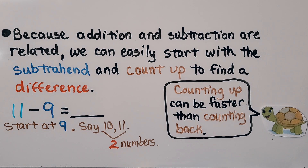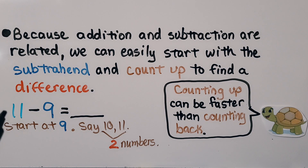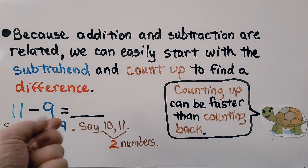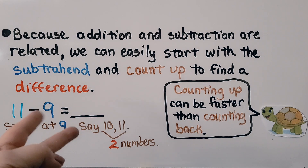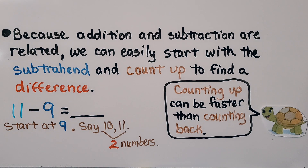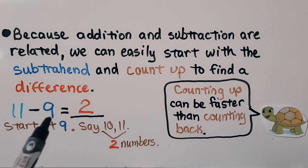Because addition and subtraction are related, we can easily start with the subtrahend and count up to find a difference. We start with 9 and say 10, 11. We needed 2 to get to 11, so the difference must be 2. Some students may find that counting up from the subtrahend is quicker than counting back.